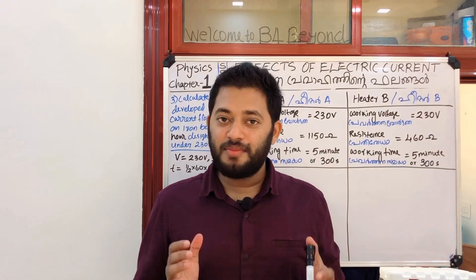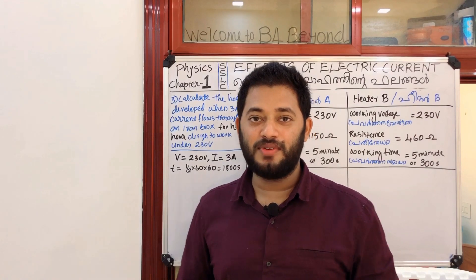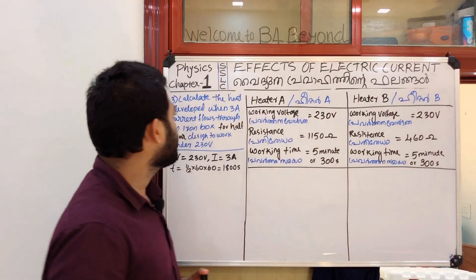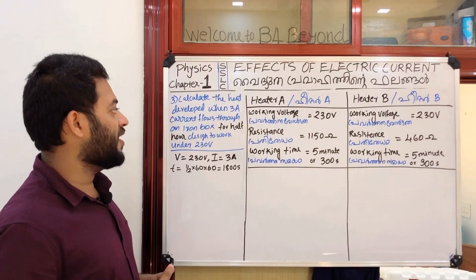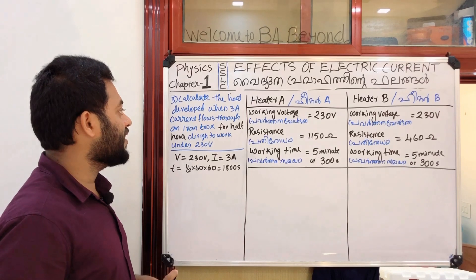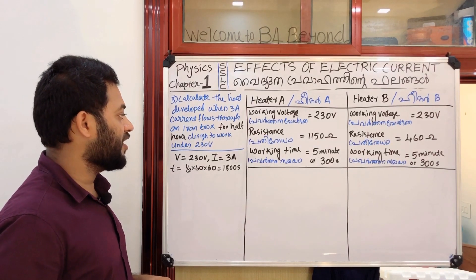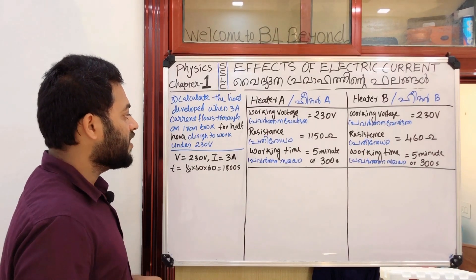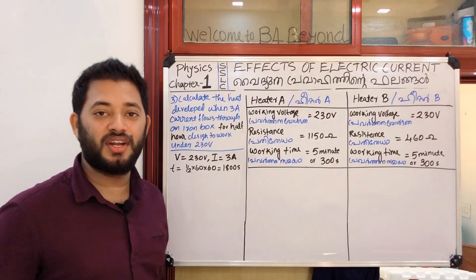Let's go to the next question. Calculate the heat developed when 3A current flows through an iron box for half an hour, designed to work under 230V.